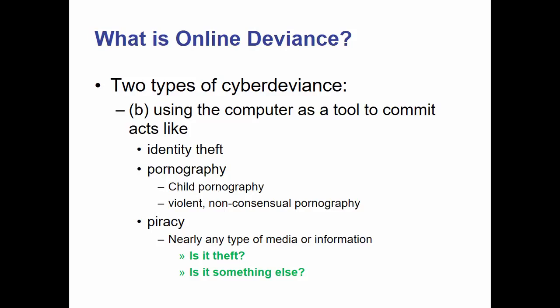Identity theft is one example of internet crime or deviance — taking someone's identity, taking their credit card numbers, taking their social security number, doing what you can with that information, stealing things from bank accounts. You could do all of those things without internet technology, but it's harder. Another thing is child pornography, or creating violent, non-consensual pornography — those types of porn that are illegal, that almost everyone in society agrees are bad. That crime could be committed without the internet, but it is enhanced and that ability takes place online.